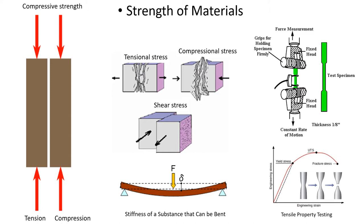Compressive strength, or compression strength, is the capacity of a material or structure to withstand loads tending to reduce size, as opposed to tensile strength which withstands loads tending to elongate. In other words, compressive strength resists compression — being pushed together — whereas tensile strength resists tension — being pulled apart. In the study of strength of materials, tensile strength, compressive strength and shear strength can be analyzed independently.